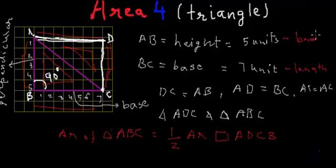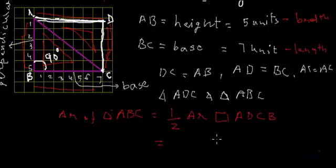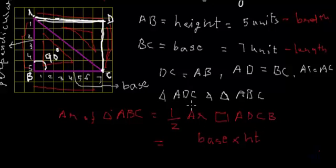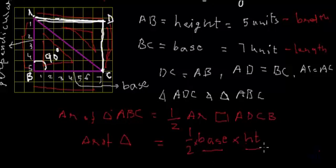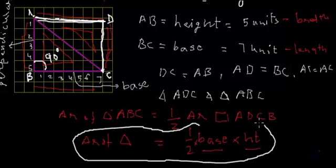So the area of this rectangle can be expressed in terms of the triangle's dimensions as base multiplied by height. And since the area of triangle ABC is half of this, the area of a triangle is half multiplied by base multiplied by height. So this is the formula for the area of a right angle triangle.